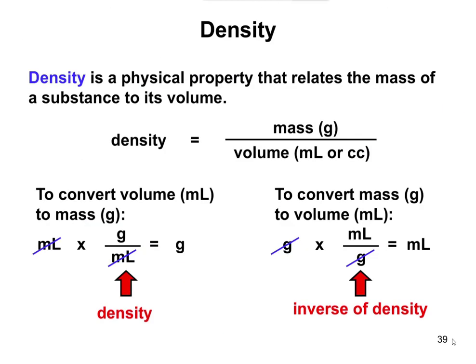So density is going to be something that is commonly going to show up as a conversion factor. Density is a physical property that relates mass to volume. A lot of you have probably heard density is mass over volume, or D equals M over V. And I've seen students come up with a triangle that shows how if you know two of the things, you can figure out the third. I don't like memorizing or doing any tricks like that.